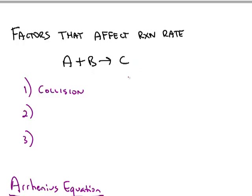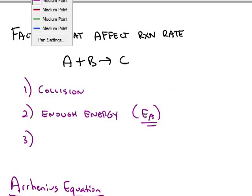Otherwise it's never going to make any product C. But not every collision is going to result in a product because the collision has to have enough energy. That goes back to what we talked about before, the activation energy. There's that barrier that has to be overcome for the products to be made.